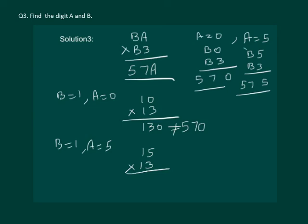Now if we can get 575 then B equal to 1 and A equal to 5 will be the answer. So let us solve it. We get 195 which is not equal to 575. Hence B equal to 1 and A equal to 5 is not the answer.